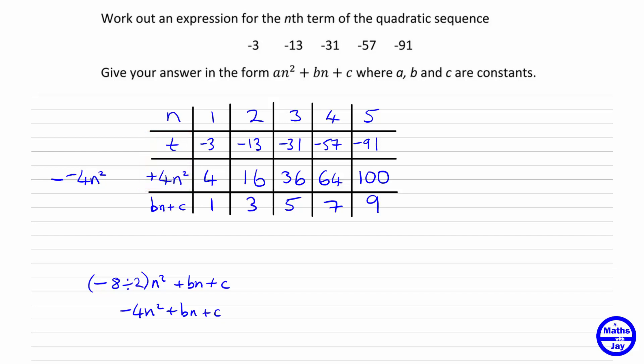So hopefully you can now see that we're left with a really simple sequence, a nice linear sequence where we have a constant difference. So we need to add on 2 to get from one term to the next. So that, in fact, gives us our value of b. So we know that the linear sequence is going to be 2n plus whatever the previous term would be in that sequence.